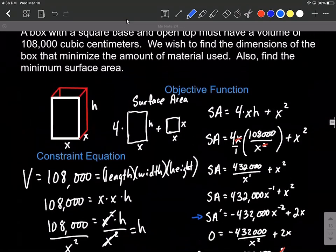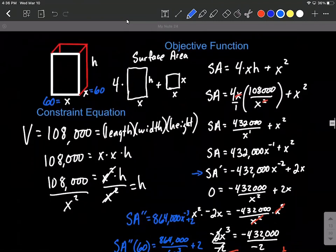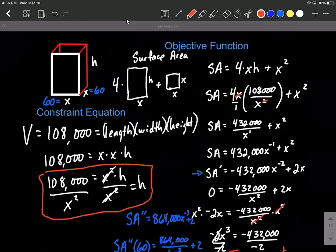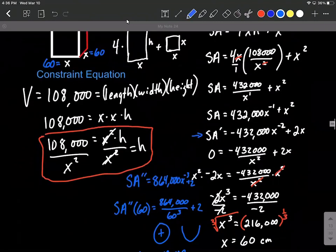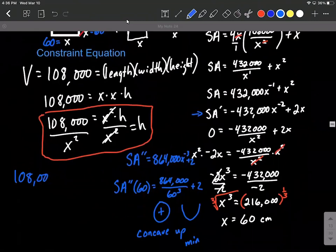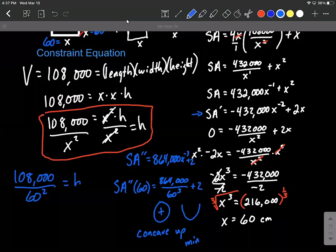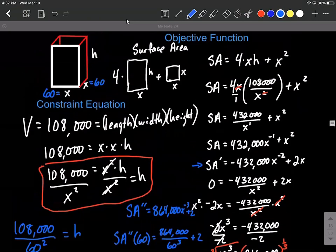All right, to finish this up, let's find the dimensions. So the dimensions here, our box is gonna be 60, 60, and then our height, we can compute that by going down here to our constraint equation. And we know that our height can be computed by plugging 60 in there. So it's gonna be 108,000 over 60 squared. That's gonna be our height. So 108,000 divided by 60 squared is gonna be 30. And again, in centimeters. So 60 by 60 by 30.